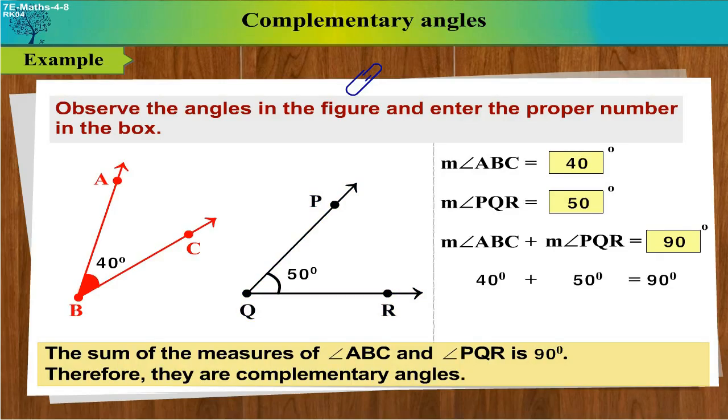The sum of the measures of Angle ABC and Angle PQR is 90 degrees. Therefore, they are complementary angles.